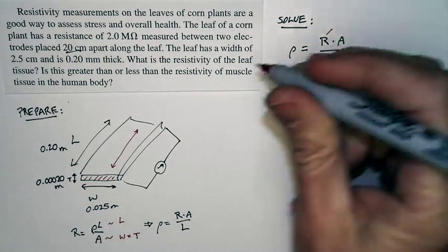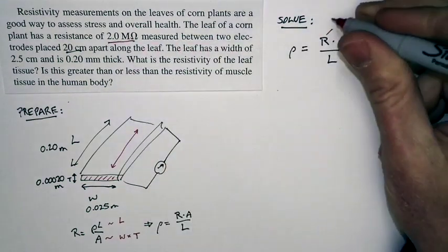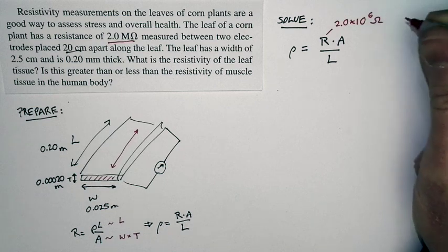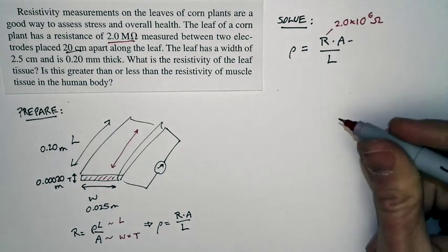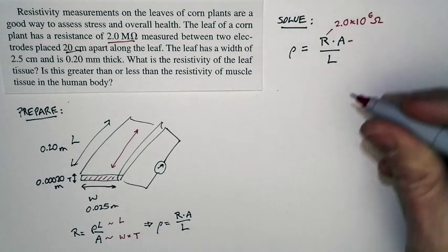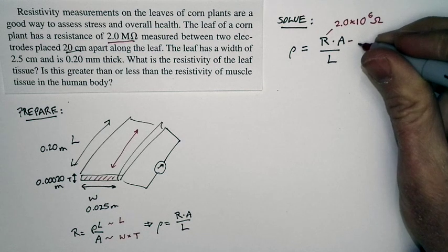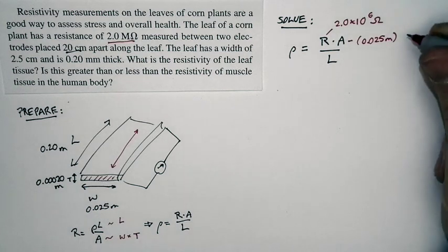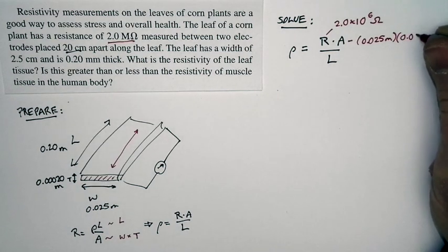The resistance was measured in the problem. It's 2 megaohms. That's 2.0 times 10 to the 6 ohms. The area is the width times the thickness. Well, the width times the thickness is 0.025 meters times the thickness 0.00020 meters.